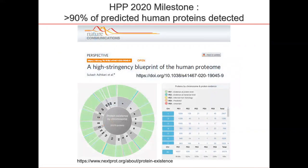Last year, the HPP project reached a major milestone in that over 90% of the predicted human proteins have been detected. This came out as a Nature Communications paper. NEXTProt being the reference database for this project, you can see here for the current release that just over 90% of the entries currently have evidence which is PE1, at the protein level.